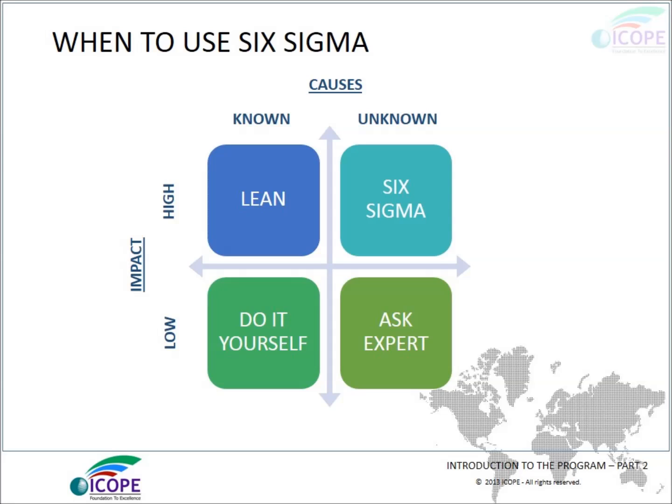When to use Six Sigma? If the problem impact is high and the causes are known, then Lean is preferred. If the problem impact is high and the causes are unknown, then Six Sigma is preferred. If the impact is low and the causes are known, you can do it yourself. If the impact is low and the causes are unknown, you can consult an expert or a consultant.